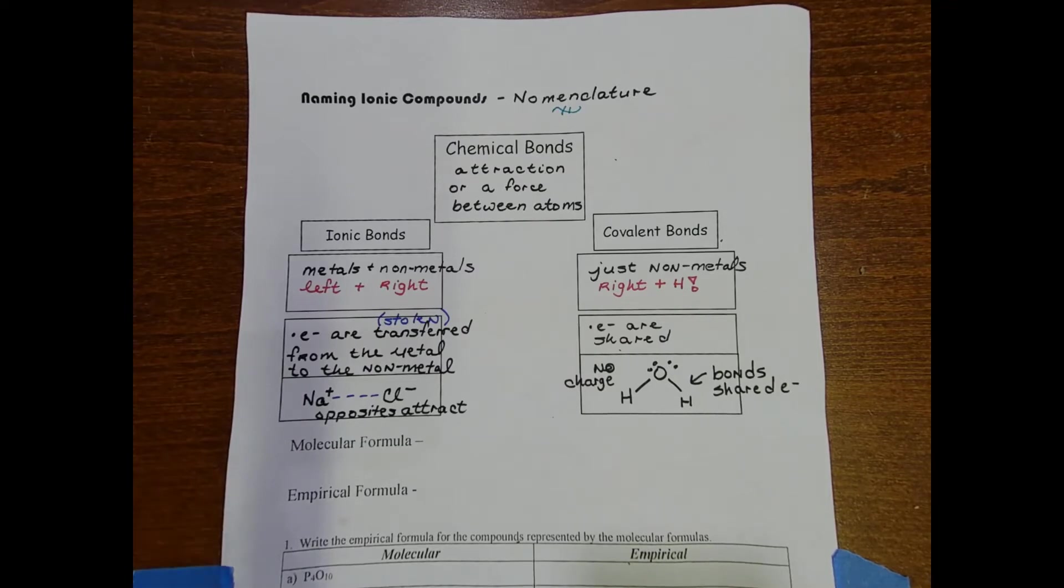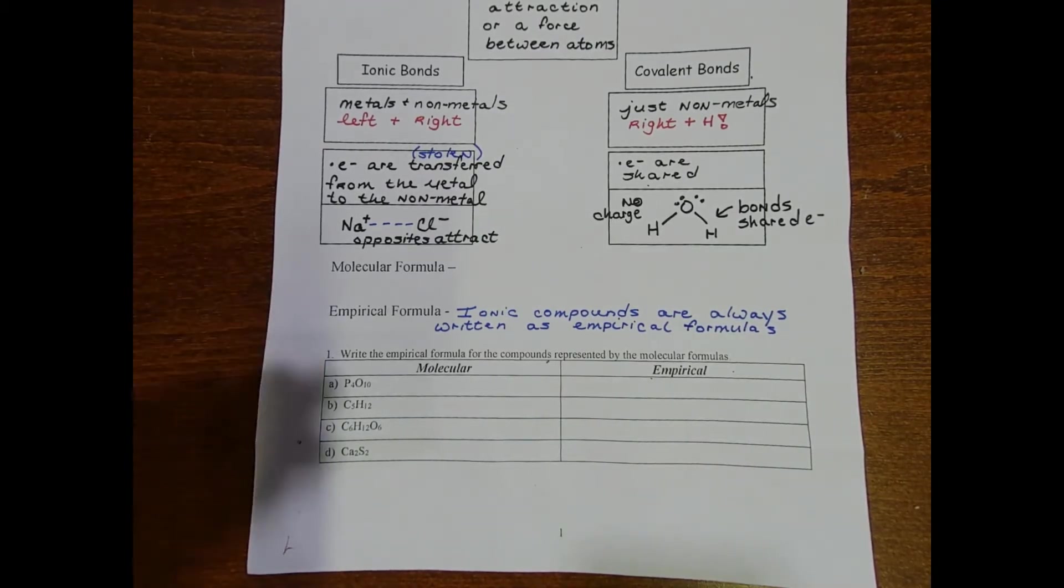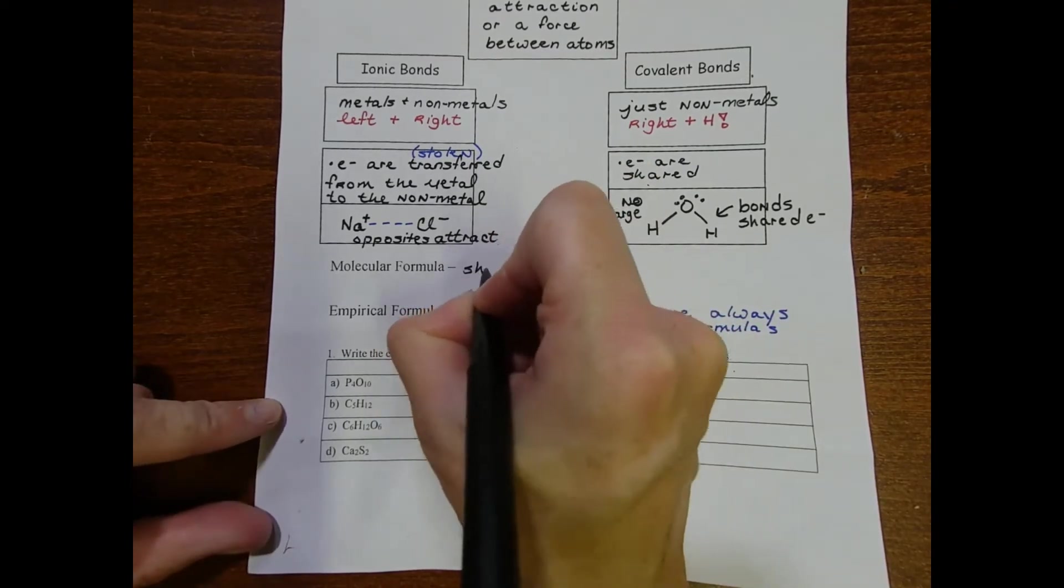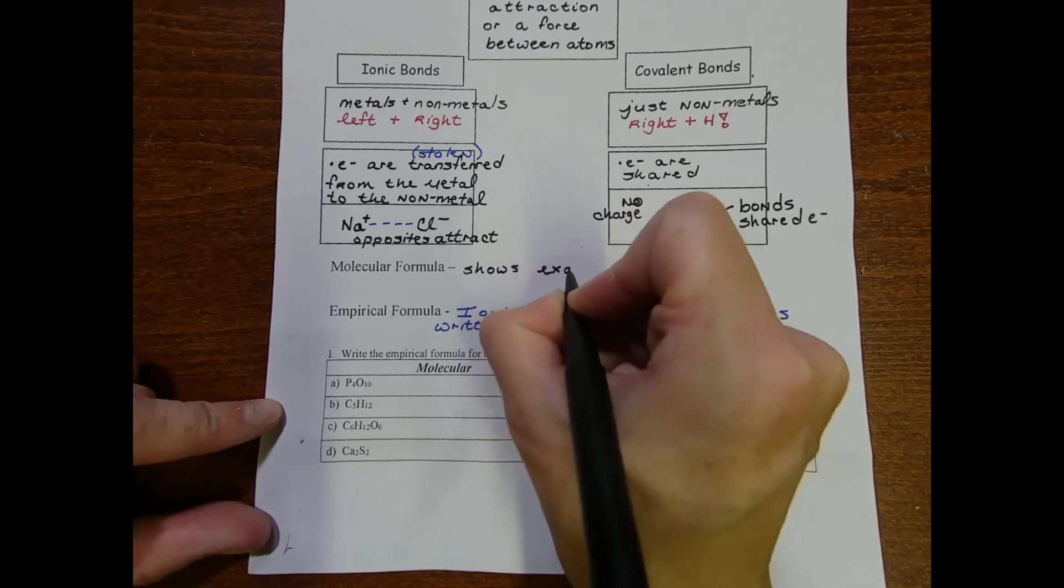The next thing we need to discuss are molecular formulas versus empirical formulas. The difference is that the molecular formula shows the exact number of each element present in a molecule.